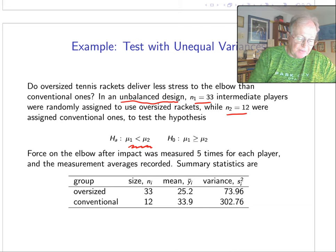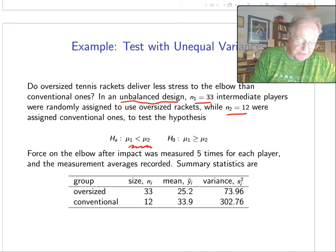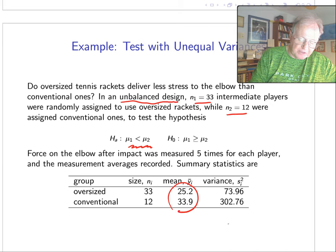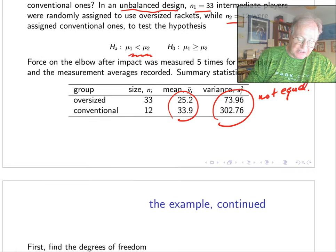We measured force on the elbow after impact five times for each player and recorded the averages. Then we summarize—so basically these means are averages of averages. There's our sample sizes and here's our variances. We see that the means are quite different, but we see also that the variances are very different—not equal.